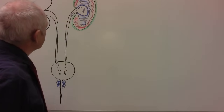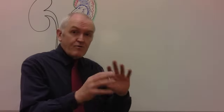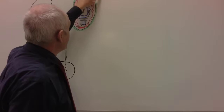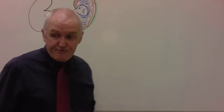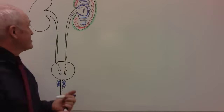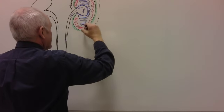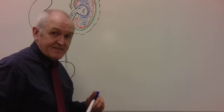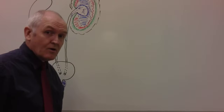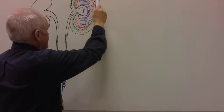Around the renal capsule there's another, hopefully fairly thick, layer of renal fat called perirenal or perinephric adipose tissue — an adipose capsule surrounding the kidney to protect it from external trauma.